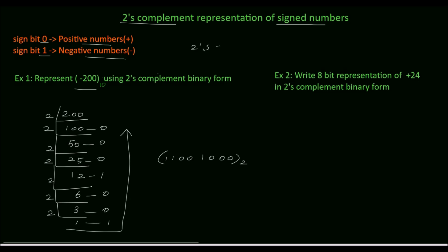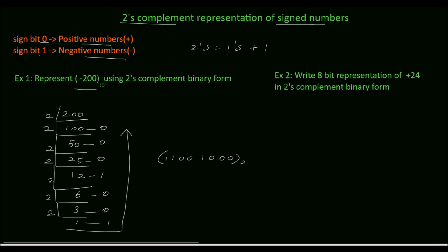The 2's complement is obtained by adding 1 to the 1's complement. So first we need to find the 1's complement of this binary number. To find 1's complement, we toggle each bit: 0 is written as 1 and 1 is written as 0.